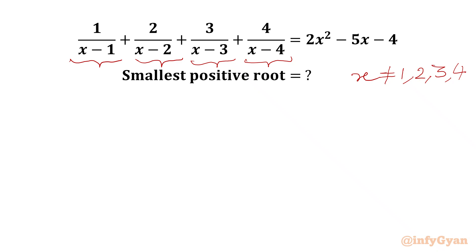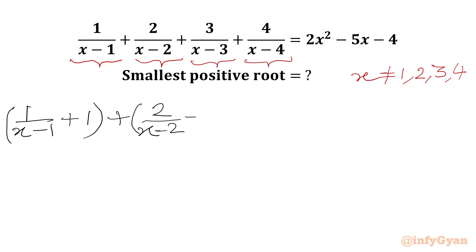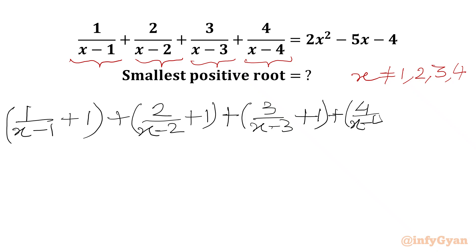Now we are going to add 4 to both sides, and we will split 4 as 1 plus 1 plus 1 plus 1 on the LHS. So we can write the equation as 1 over x minus 1 plus 1, second term as 2 over x minus 2 plus 1, third term as 3 over x minus 3 plus 1, and the fourth term as 4 over x minus 4 plus 1. On the RHS we have 2x squared minus 5x minus 4 plus 4, so the minus 4 and plus 4 cancel.